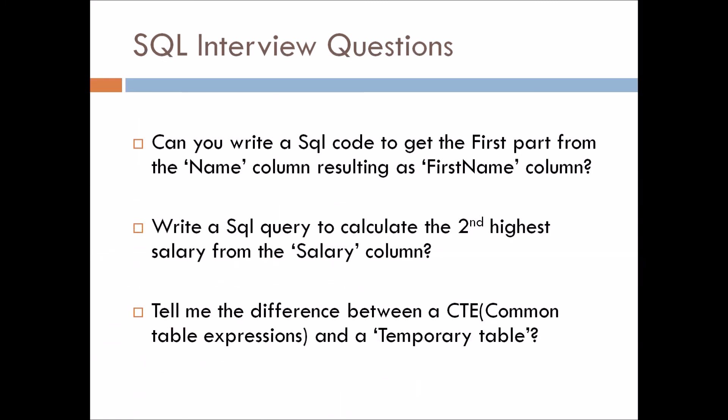These are SQL coding questions. First: can you write a SQL code to extract the first part of a name column resulting as a first name column — basically take the first part of the name and create a new column. Second: write a SQL query to calculate the second highest salary from the salary column. The last one is: tell me the difference between a CTE (Common Table Expression) and a temporary table.